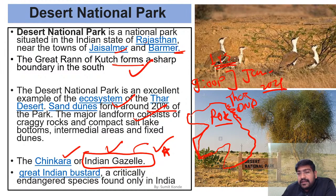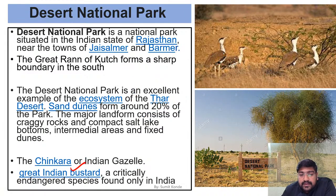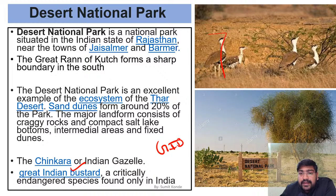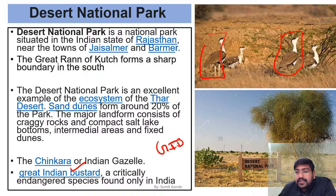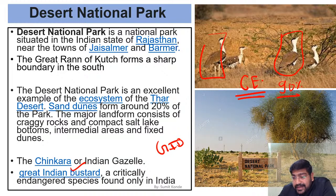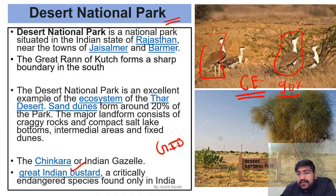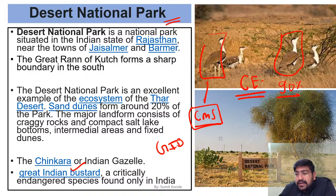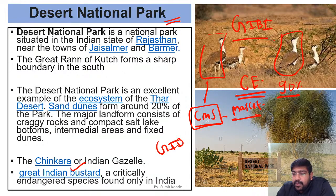The most important species of Desert National Park is the Great Indian Bustard (GIB), whose numbers have drastically declined in recent years and is now critically endangered — population has dropped by almost 90% over the last few decades. A dedicated sanctuary exists for the GIB. At the CMS (Convention on Migratory Species) meeting held in Gandhinagar, Gujarat last year, its mascot was 'Gibbi' — short for Great Indian Bustard.